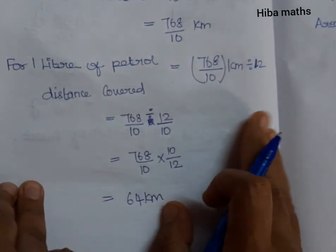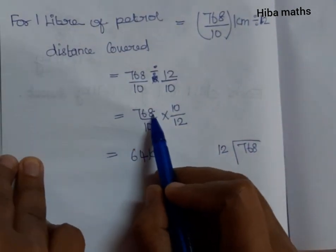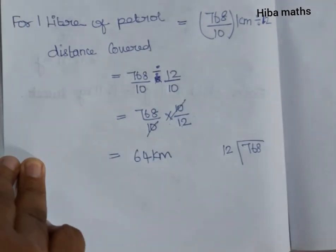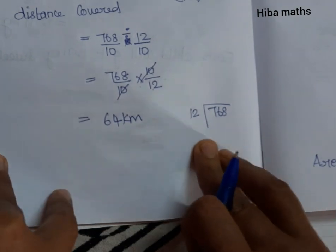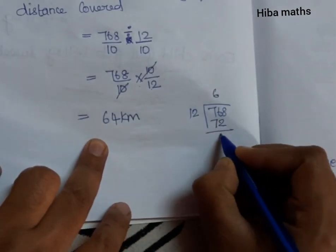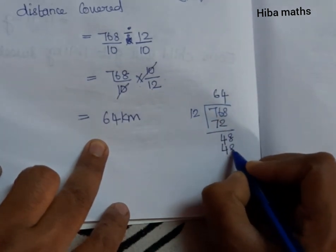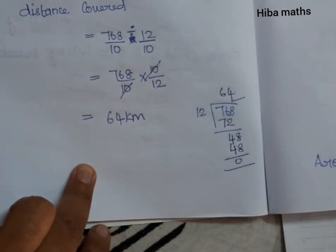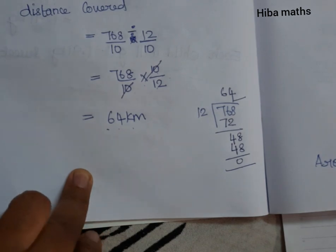Next line: 768 divided by 10 into 10 by 12. The two 10s cancel. Now we have 768 divided by 12. 12 sixes are 72; 6 minus 2 is 4, bring down 8. 12 fours are 48. Remainder 0. So the answer is 64. We can travel 64 kilometers per liter of petrol.